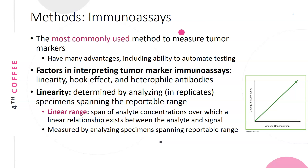Linearity is determined by analyzing replicates of specimens spanning the reportable range — from very low to very high levels. The linear range is the span of analyte concentration over which there is a linear relationship between the analyte and the signal. For example, if the signal is absorbance, the higher the analyte concentration, the higher the absorbance and the higher the signal.